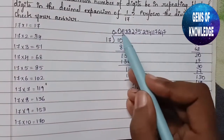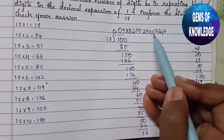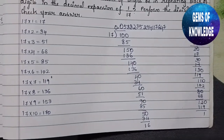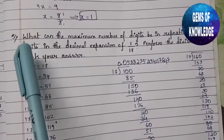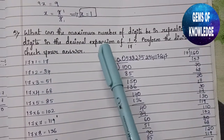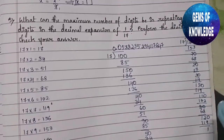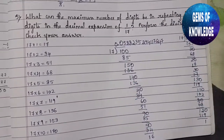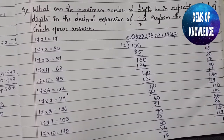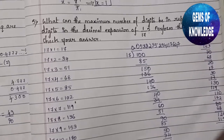Counting the digits produced before the remainder repeated: 1, 2, 3, 4, 5, 6, 7, 8, 9, 10, 11, 12, 13, 14, 15, 16 — so the repeating block has 16 digits. The maximum number of digits in the repeating block of 1/17 is 16. I hope this question is clear. We'll solve the next question in my next video — don't forget to like, share, and subscribe. Stay tuned and stay connected, thank you!